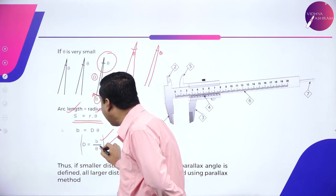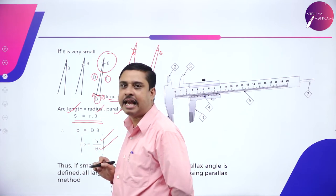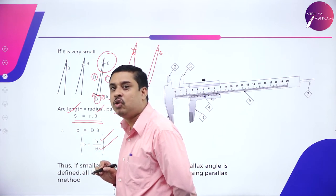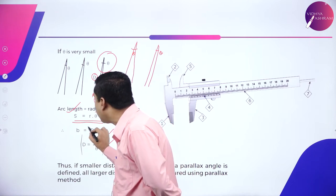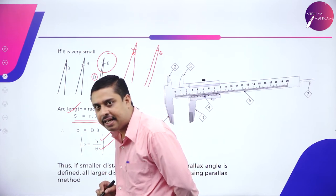divided by theta, or large distance D is arc length divided by the parallax angle. So, very clearly you see, by using the parallax method technique, I can calculate very large distances. So, if I define again,